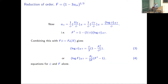We can actually eliminate one of these variables. Writing F in terms of phi gives an expression, and since F times phi equals F_0, we can eliminate either F or phi. Eliminating F gives a single equation for phi; eliminating phi gives a single equation for F.